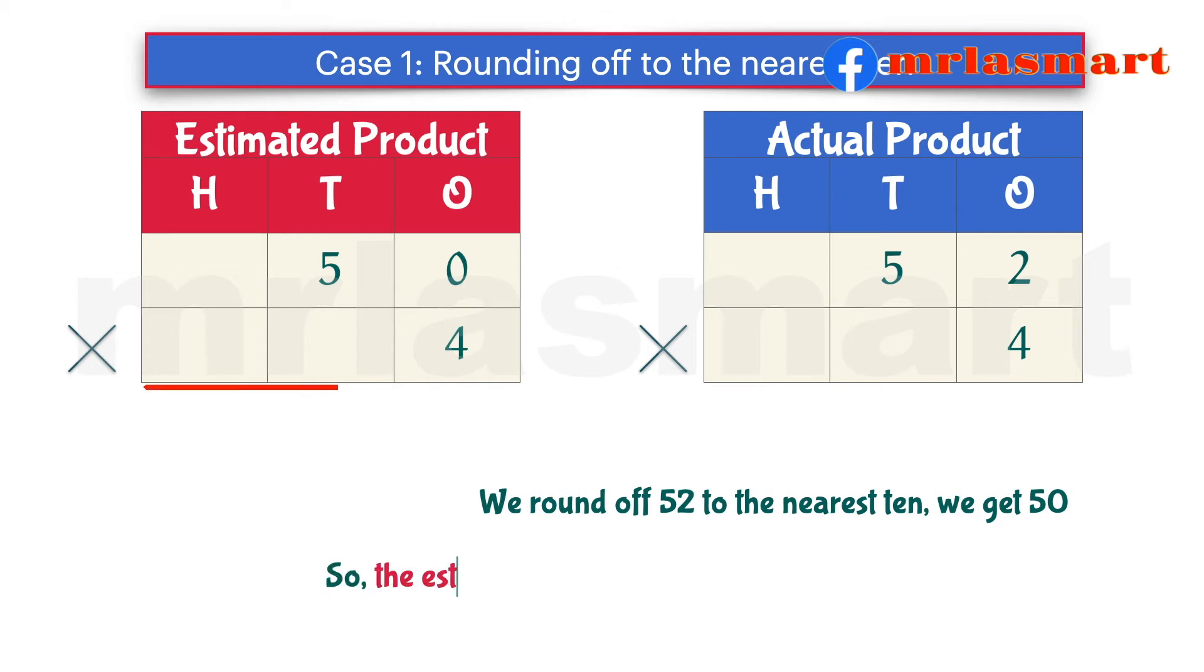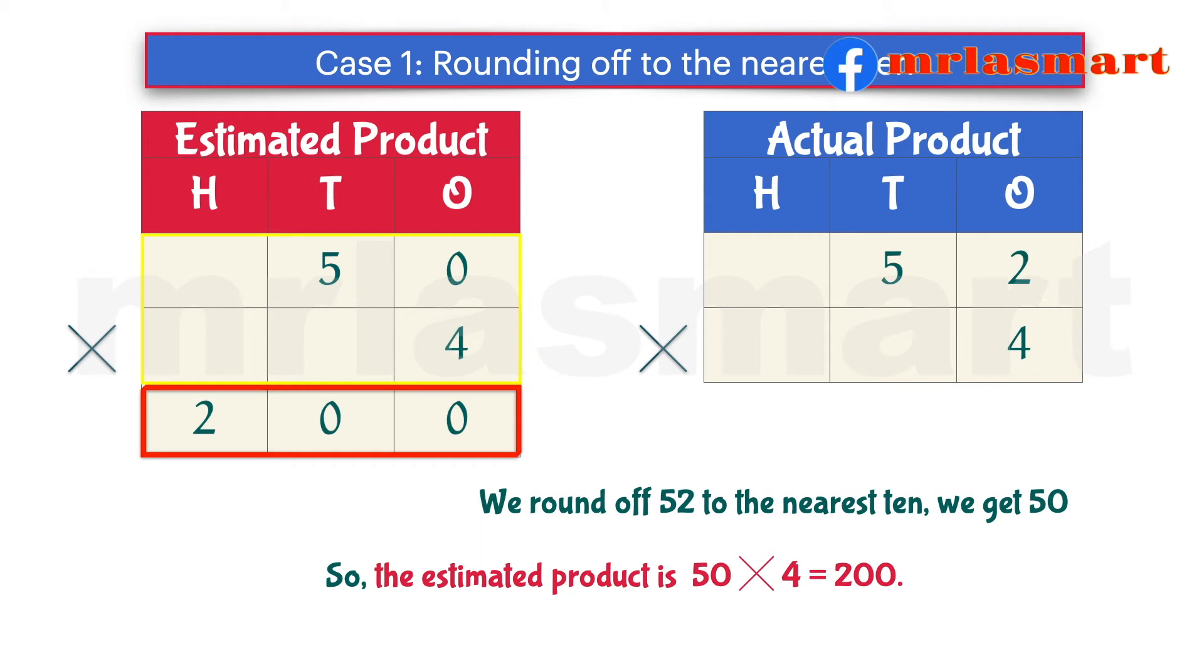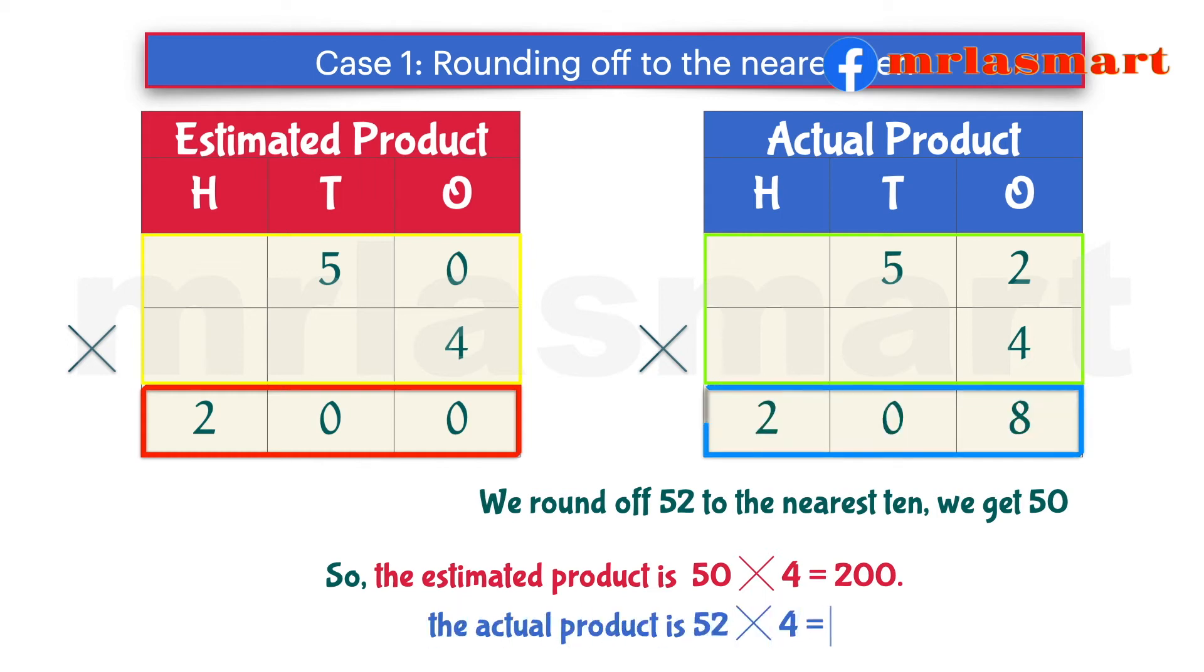So, the estimated product is 50 multiplied by 4 equals 200. The actual product is 52 multiplied by 4 equals 208.